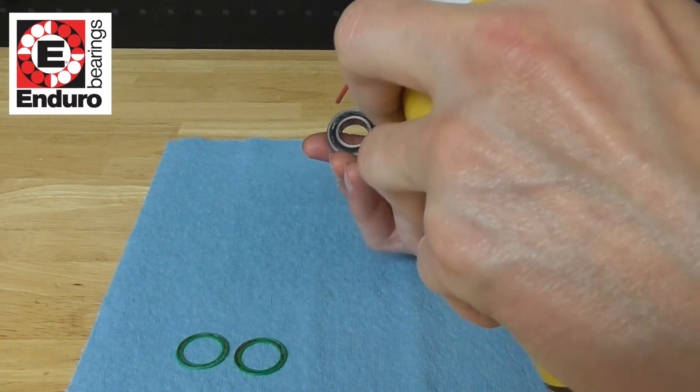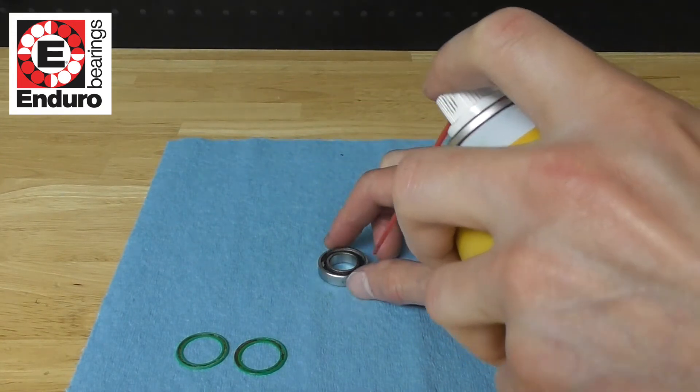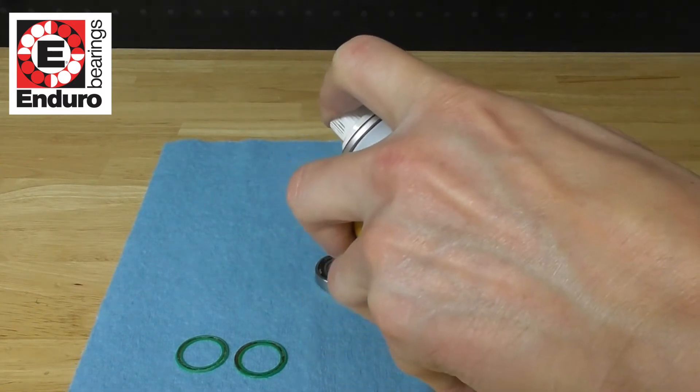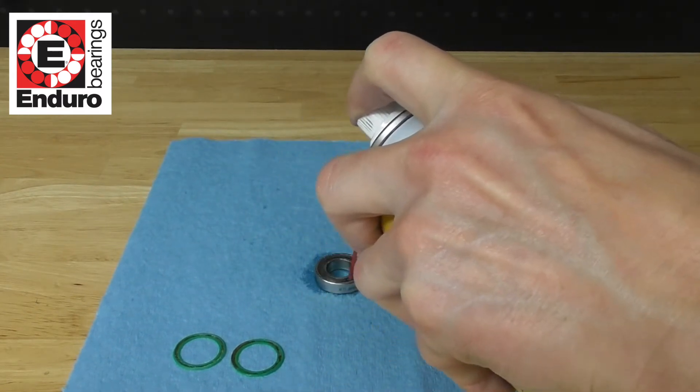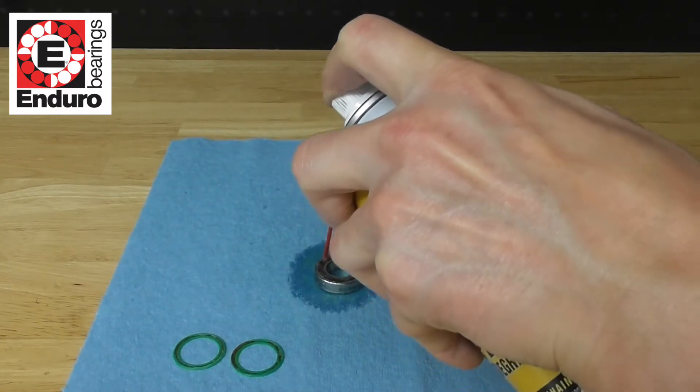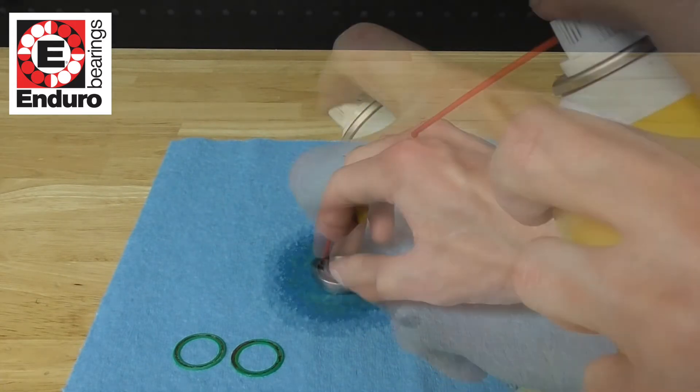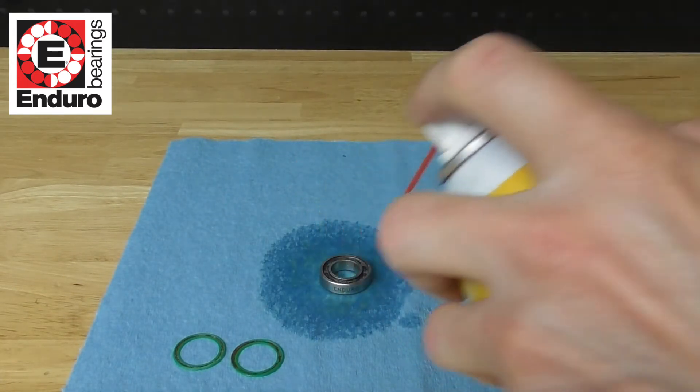Use a spray degreaser to remove contaminants and old grease from the bearing. Repeat the process on the opposite side.